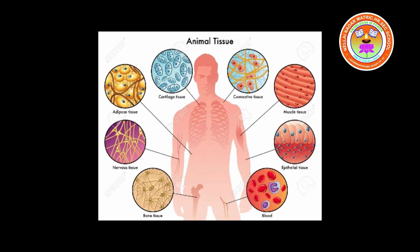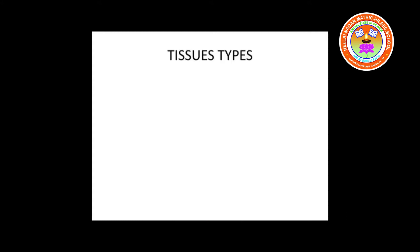Animal tissue can be grouped into four basic types on the basis of their structure and function: epithelial tissue, connective tissue, muscular tissue, and nervous tissue. In this chapter, I am going to take epithelial tissue and connective tissue.